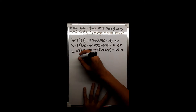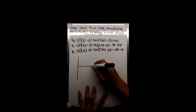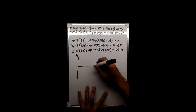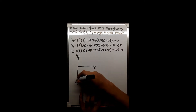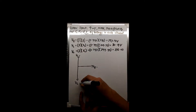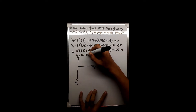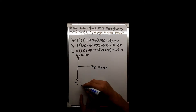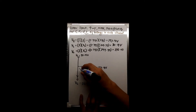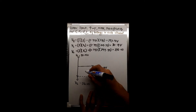Now let's draw a phasor diagram. We have VL equal to 80.14 volts, VR equal to 197.91 volts, and VC equal to 216.03 volts. The sum of all the vectors — the components for the voltages — gives us the supply voltage.